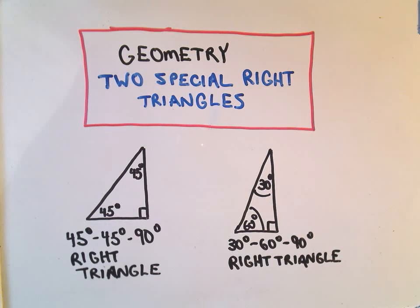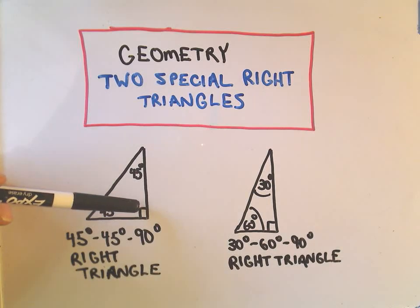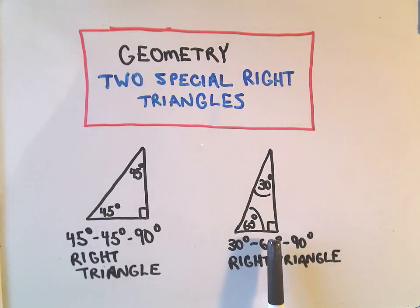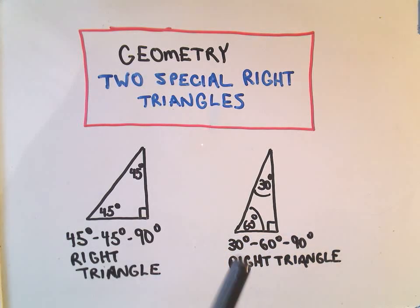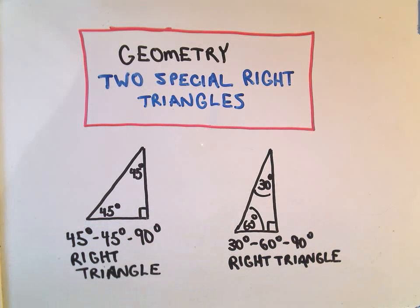In this video I want to talk about a little bit of geometry and two special right triangles. The first is the 45-45-90 degree right triangle, where one angle is 90 and the other two angles are each 45 degrees. The second triangle also has a right angle of 90 degrees, with one angle of 30 degrees and another of 60 degrees.